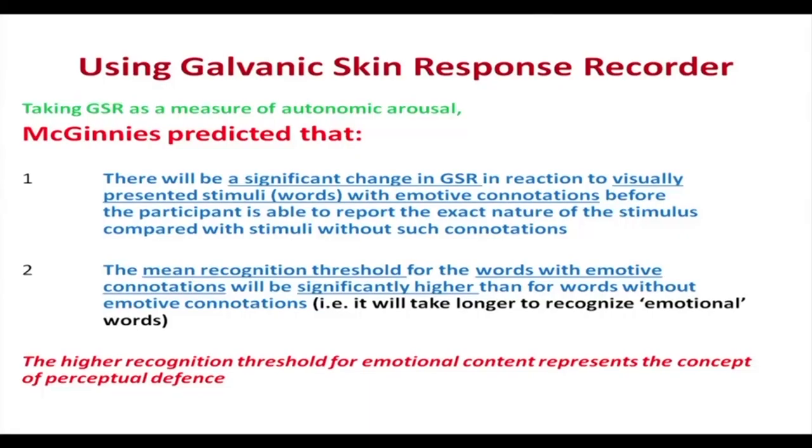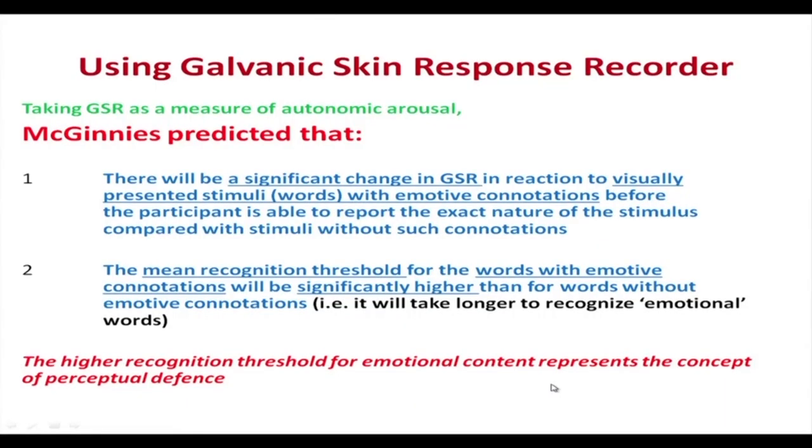The mean recognition threshold for words with emotive connotations would be significantly higher than for words without — meaning it would take more time to recognise emotional words. Because of perceptual defence, it takes more time to break through that defence and enter consciousness, even though the individual is aware of the word at an earlier level. The higher recognition threshold for emotional content thus represents the concept of perceptual defence.